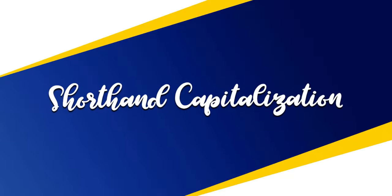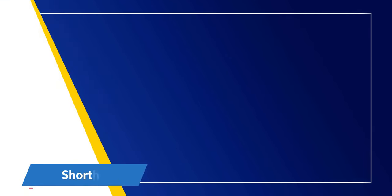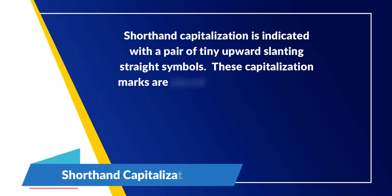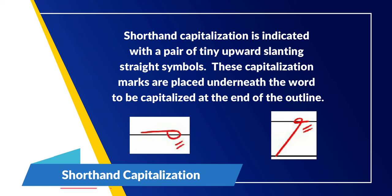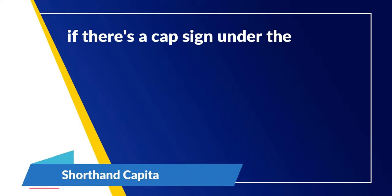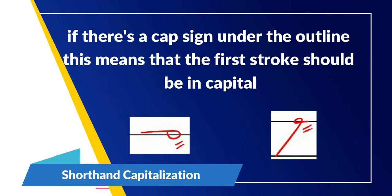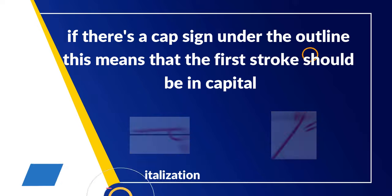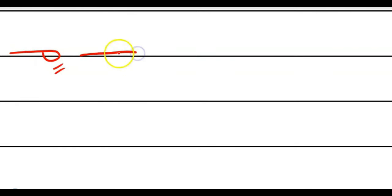Shorthand capitalization is indicated with a pair of tiny upward slanting straight symbols. These capitalization marks are placed underneath the word to be capitalized, at the end of the outline. The first word of each sentence is, of course, capitalized. We have the following capitalized words. First, 'May' — written M-A, then the capitalization mark.